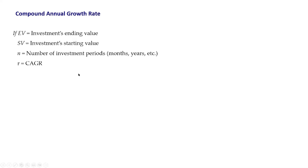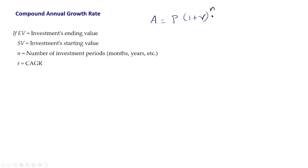Now we will see how we can get the formula for compound annual growth rate. These are the terms used in the formula: EV is the investment's ending value, SV is the investment's starting value, N is the number of periods, and R is the compound annual growth rate. The number of investment periods can be either in months or in years. We are familiar with the formula A equals principal P into 1 plus R, the whole raised to N, where N is the number of investment periods.